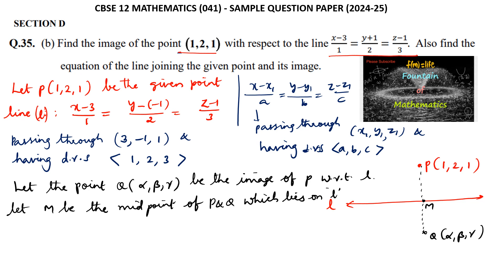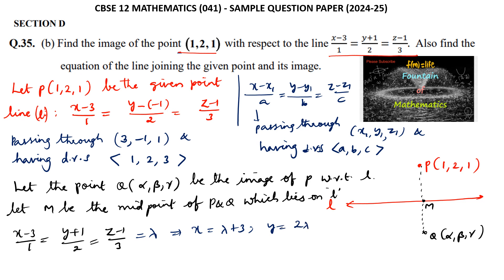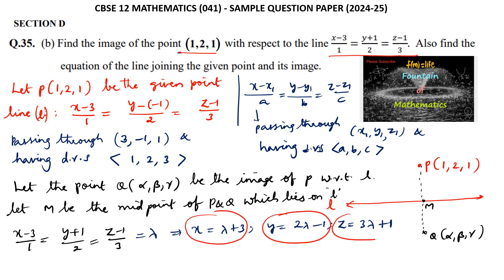Let us take the general point on the line. Since (x − 3)/1 = (y + 1)/2 = (z − 1)/3 = λ, this implies x = λ + 3, y = 2λ − 1, and z = 3λ + 1. So the coordinates of point M are (λ + 3, 2λ − 1, 3λ + 1).